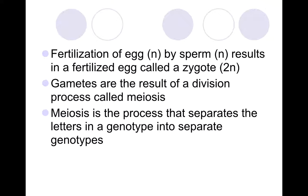When fertilization occurs, the egg and sperm — both haploid cells depicted as N — come together and fertilize. When they fertilize, they result in a zygote depicted as 2N, because it brings the N from the egg and the N from the sperm together. Gametes are the result of a division process called meiosis, which separates the alleles of the genotype into separate sex cells so they can be brought together during fertilization.